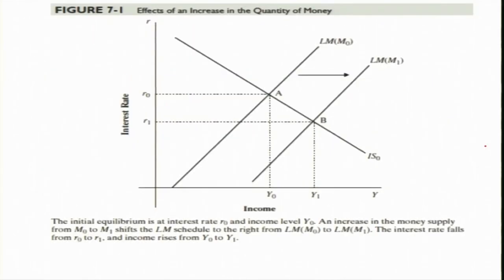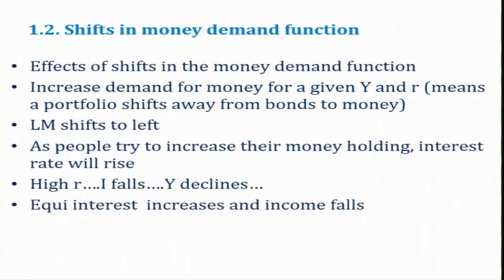Representing this using a diagram, when the LM curve shifts rightwards, the rate of interest will decrease from R naught to R1. As a result, income will be increasing — this is del Y. Due to del R, del Y increases this much, and income will increase from Y naught to Y1. Similarly, regarding shifts in the demand function — what if there is more demand for money?